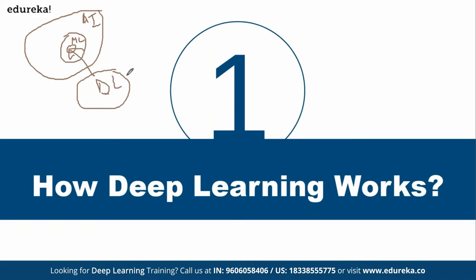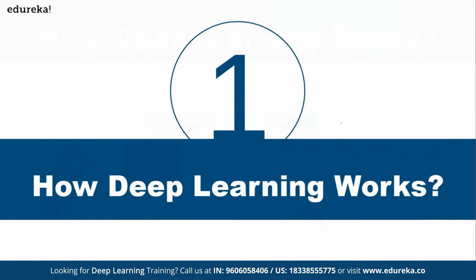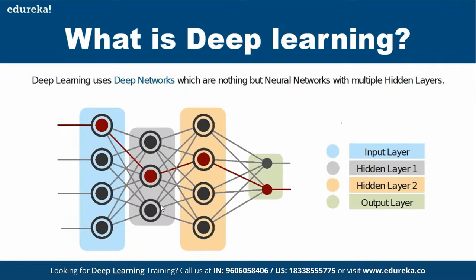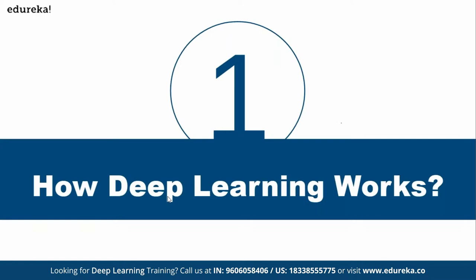Why the name 'deep learning'? Because of multiple layers of networks — that's why they put the word 'deep.' Deep learning is also a machine learning algorithm; it's nothing different. When they say 'deep,' it means you have multiple layers that actually learn. Any deep neural network will have multiple hidden layers, and because of that the name became deep learning.